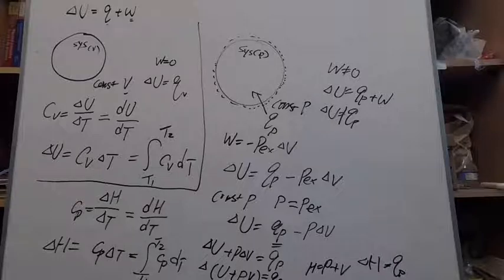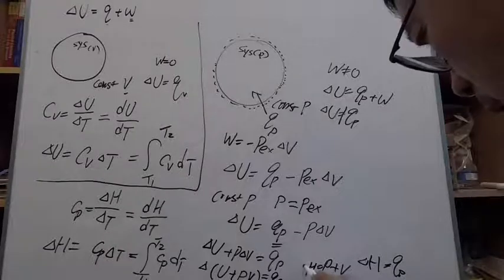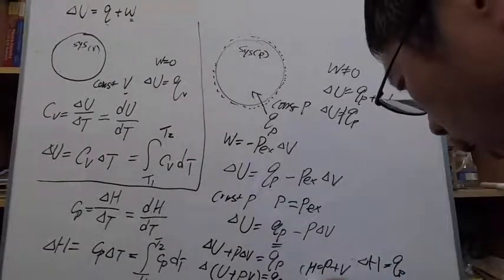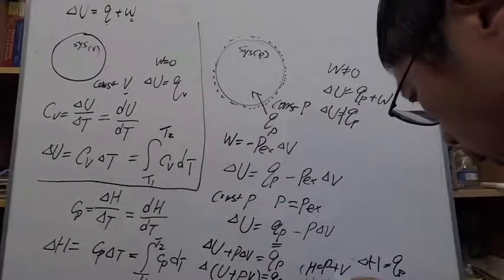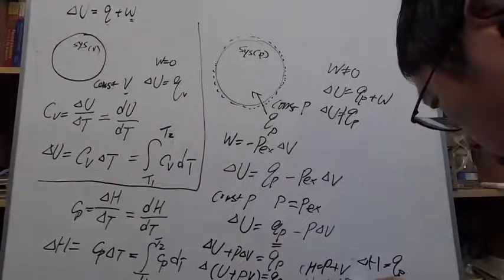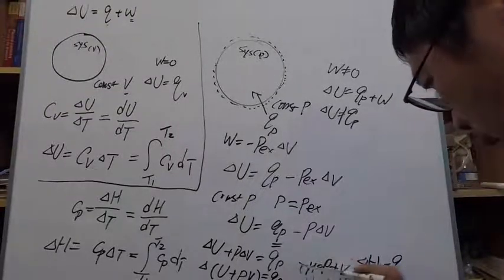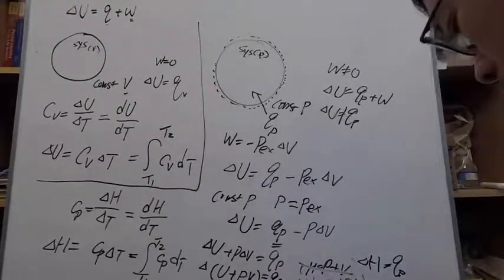A correction: enthalpy is defined as internal energy plus the pressure-volume product of the system — H = U + PV. That is the definition of enthalpy.